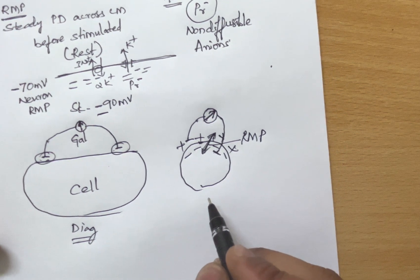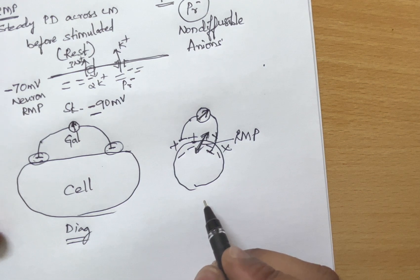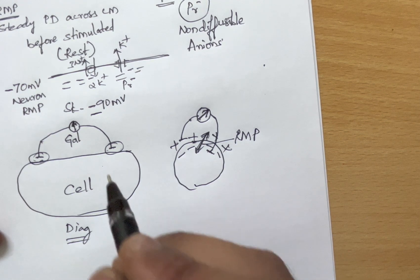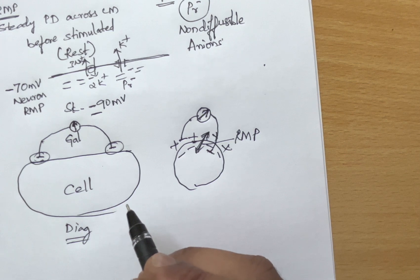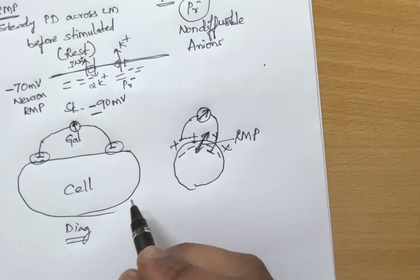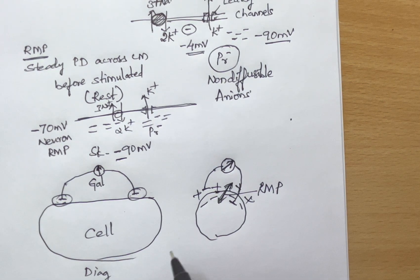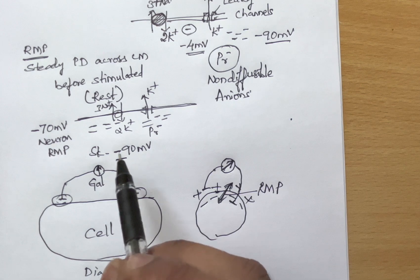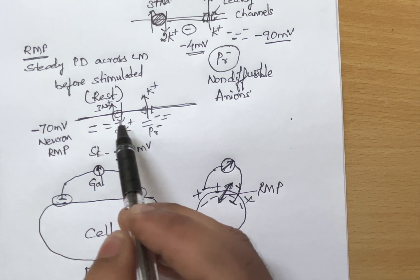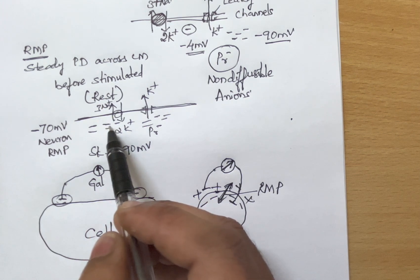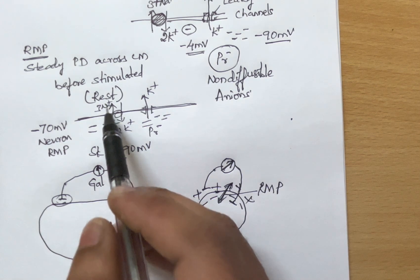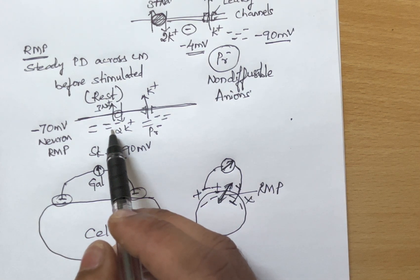This is the ionic basis for resting membrane potential — why the resting membrane potential is negative inside. This is because of two or three reasons. The first is the role of the sodium-potassium ATPase pump, which pumps more positive charge out of the cell to the exterior, creating negativity inside.